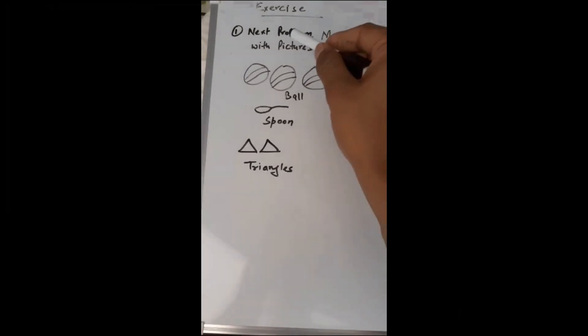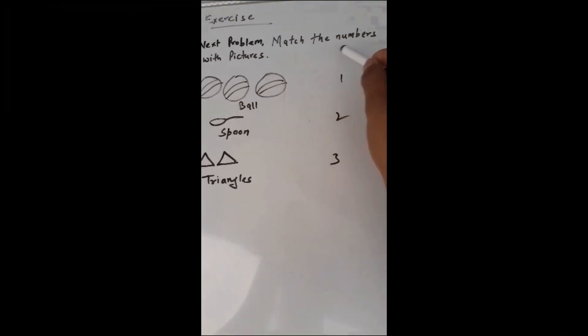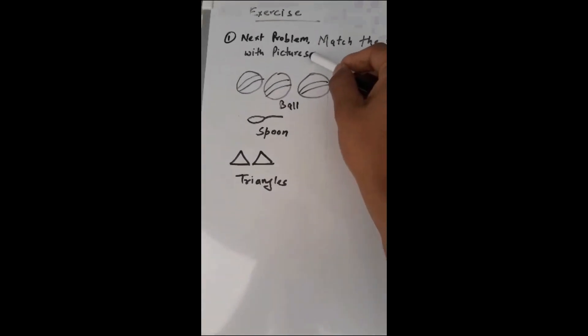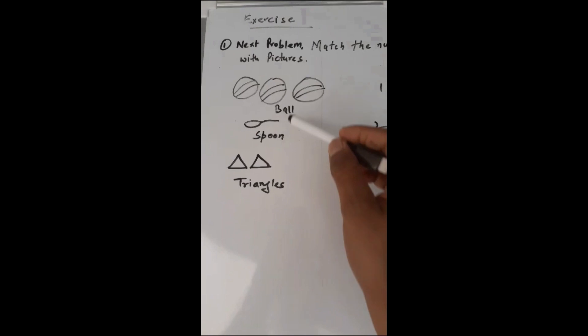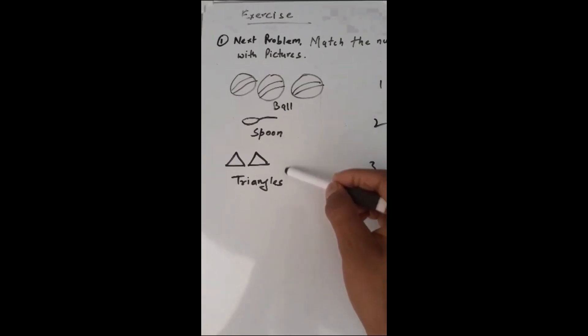So hello friends, next problem I want to show you. Match the numbers with pictures. There are some pictures which I have drawn, for example, ball, spoon, and triangles. Here are some numbers I have written: 1, 2, and 3.